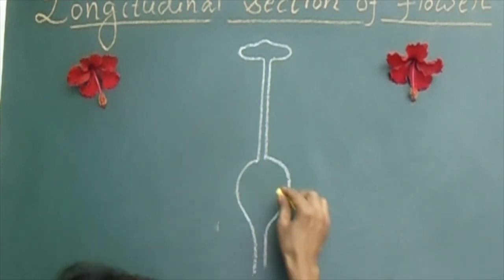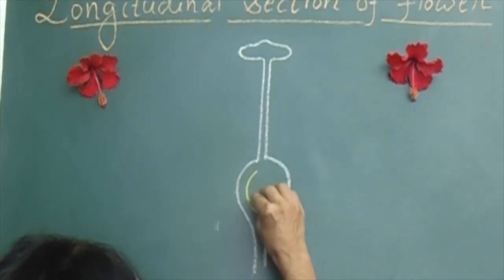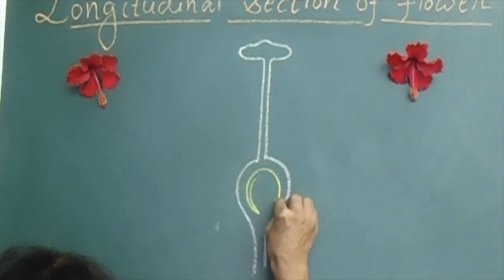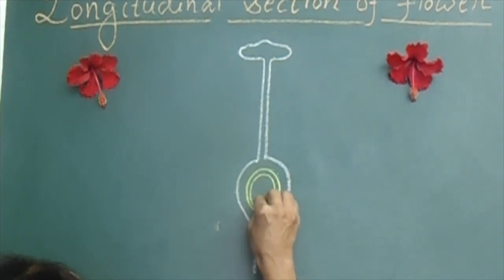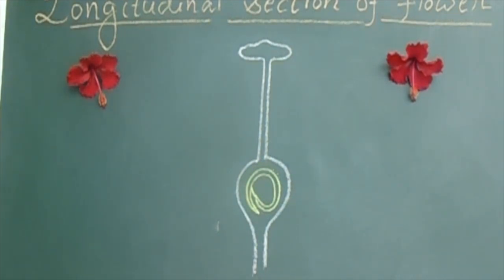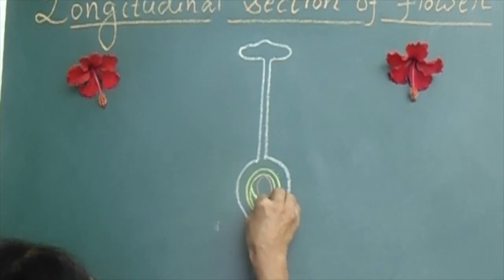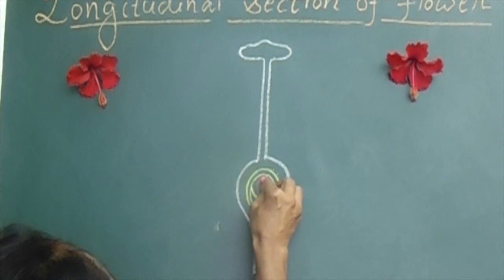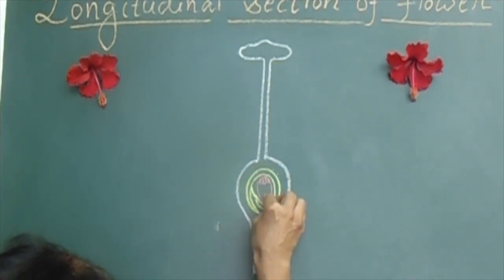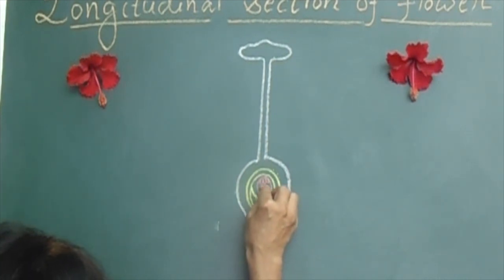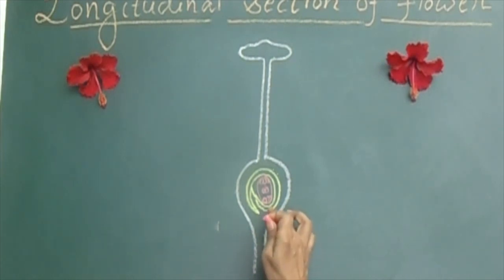Now we have to draw the inner part. Just come in this way — pointed region — then make it an oval structure. We have to remember that an ovary contains ovules inside it. When we draw the oval, we draw three structures here on each side and two small structures at the center. So this is our ovary.